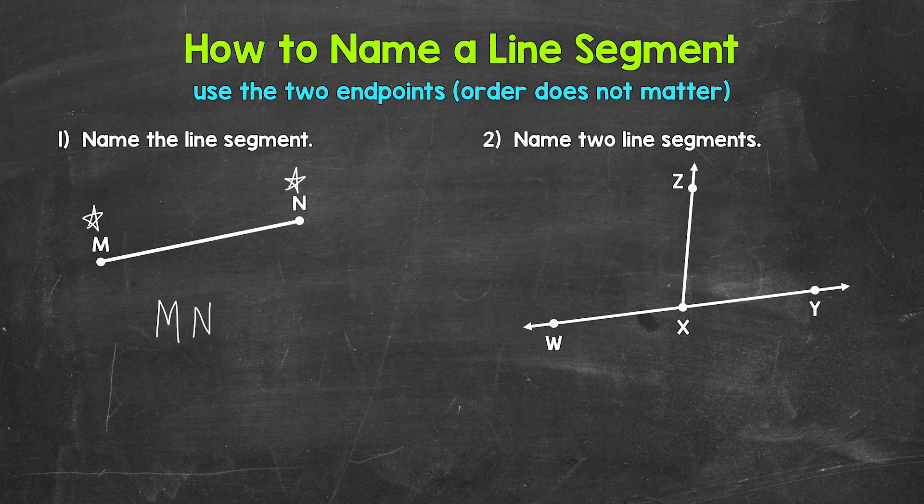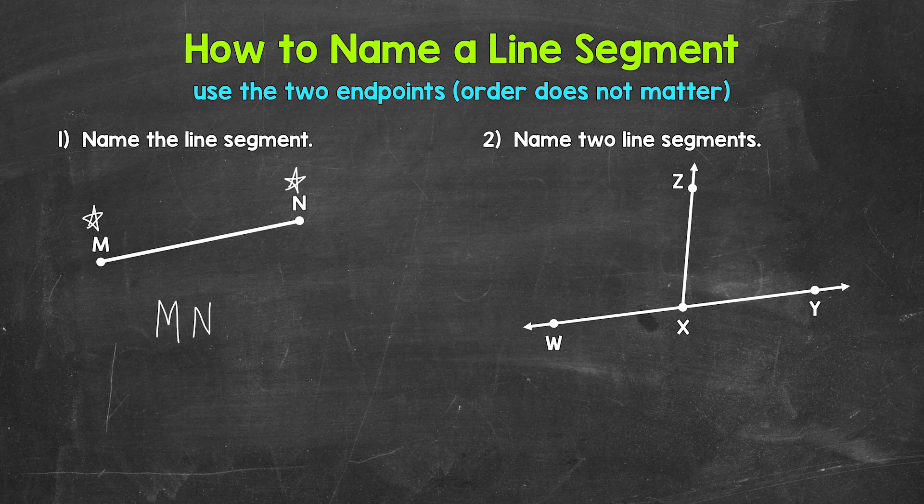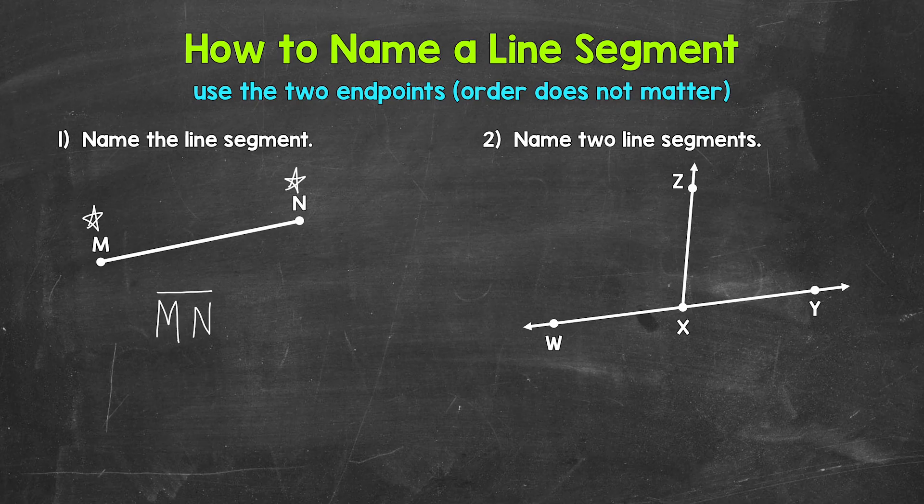And remember, when working with points, we use capital letters to name them. So we need capitals here. And then we use the line segment symbol above the endpoints. Notice that we don't have any arrows on this symbol. This shows us that the line segment stops at point M and stops at point N. So we have endpoints.